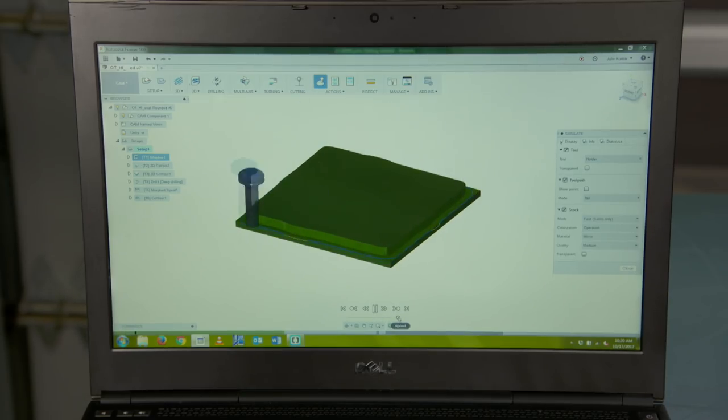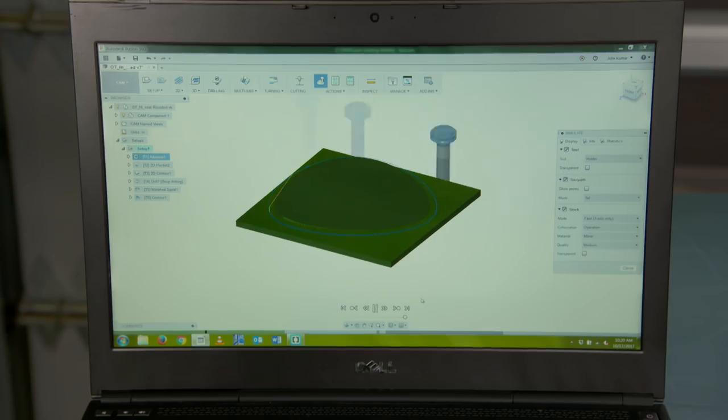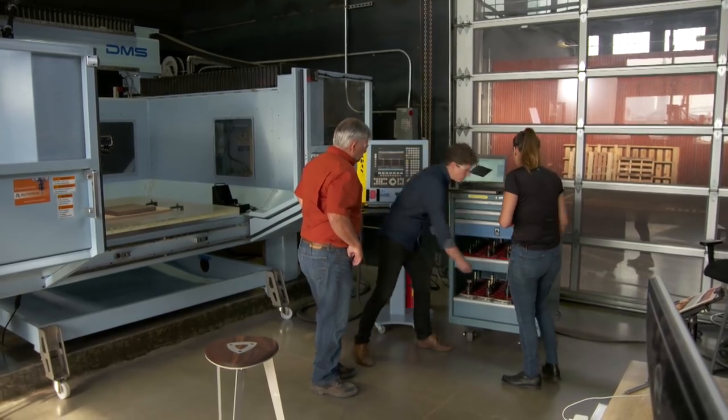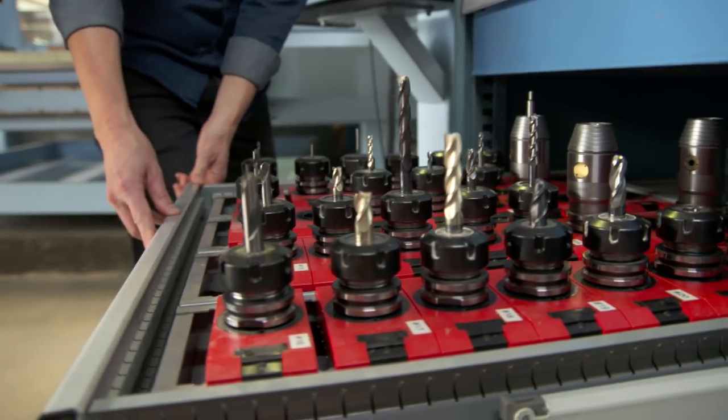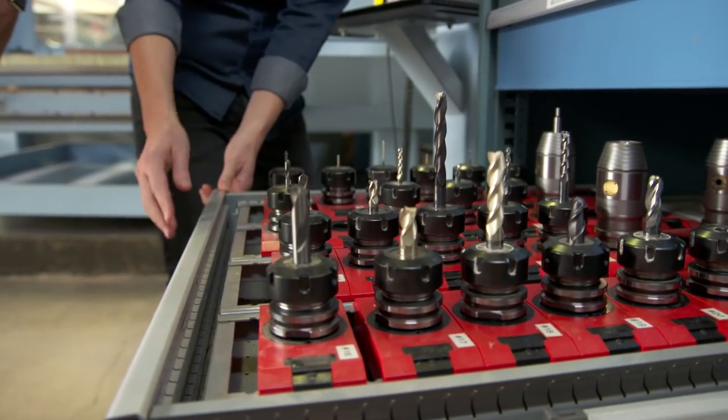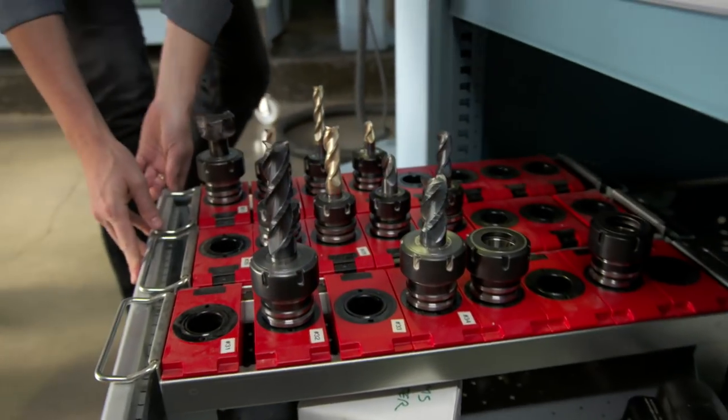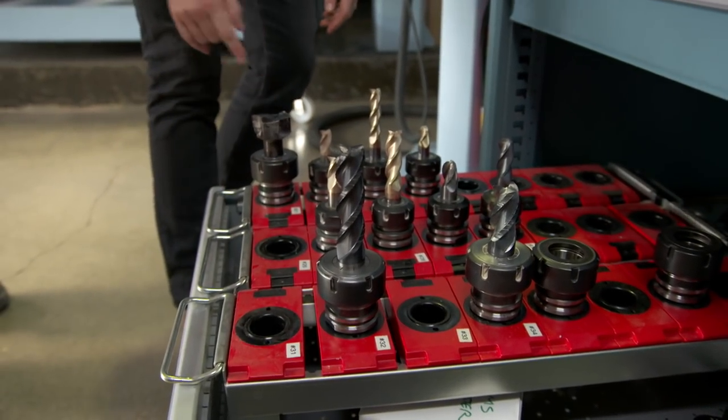So this is a way that I can verify that the end mill doesn't end up colliding with my work holding system and the holder doesn't end up colliding with the stock. You can see here in our shop, we've got a huge variety of cutters. Everything from these eighth inch end mills to our bigger roughing tools and even our face mills.